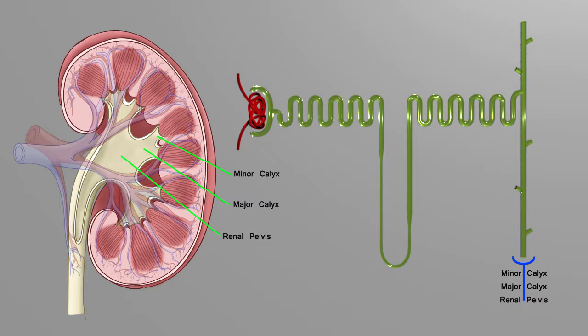From the renal pelvis, the urine will empty into a ureter. The ureter is a tube that drains away from the hilum of your kidney. You've got a right ureter and a left.